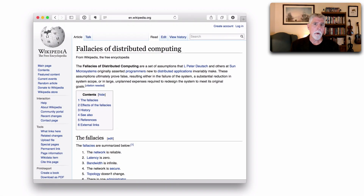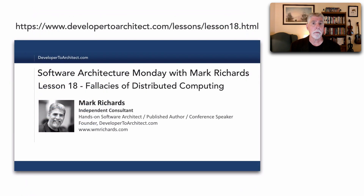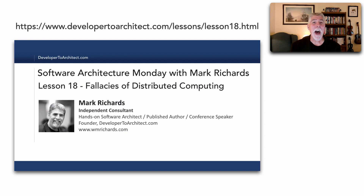In Lesson 147 two weeks ago I talked about the eight fallacies of distributed computing that were coined in the mid-90s by Peter Deutsch and some other folks from Sun. In Lesson 18 I talked about each of those eight fallacies. Two weeks ago in Lesson 147 I also introduced fallacy number nine of distributed computing, which is that versioning is simple — and it's not, because a fallacy is something we believe to be true that is not true.